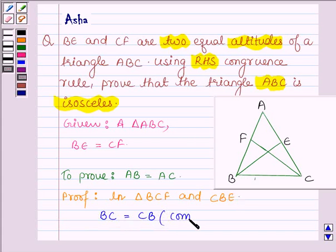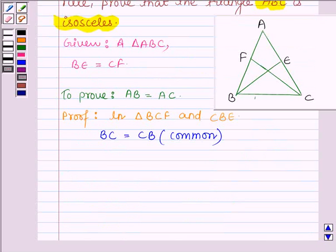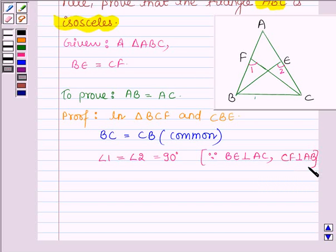Let us name these two angles as angle 1 and angle 2. Now, angle 1 is equal to angle 2 is equal to 90 degrees since BE is perpendicular on AC and CF is perpendicular on AB. Since BE and CF are the two altitudes.